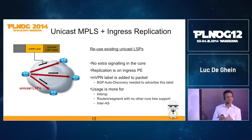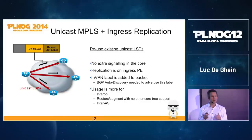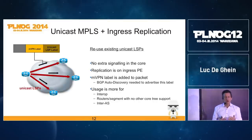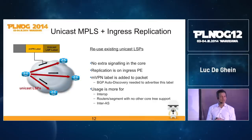As mentioned, ingress replication is not very efficient, so use cases are limited. You would typically use it only if some routers in part of your network don't understand MLDP or point-to-multipoint TE, or in inter-autonomous system routing between two ASBR routers where you just have a single point-to-point link. But it's not for everyday use.